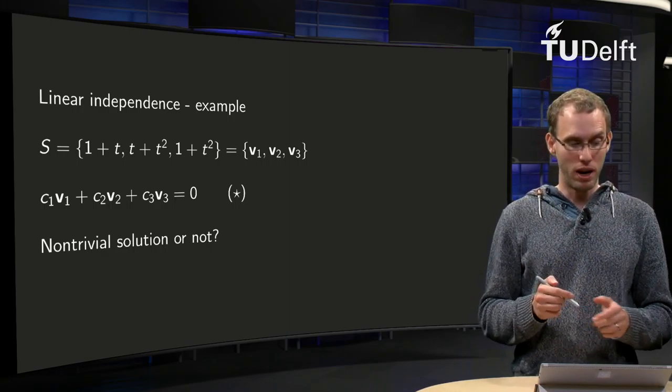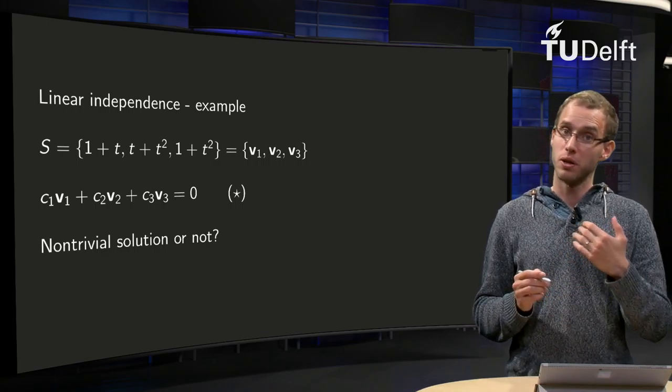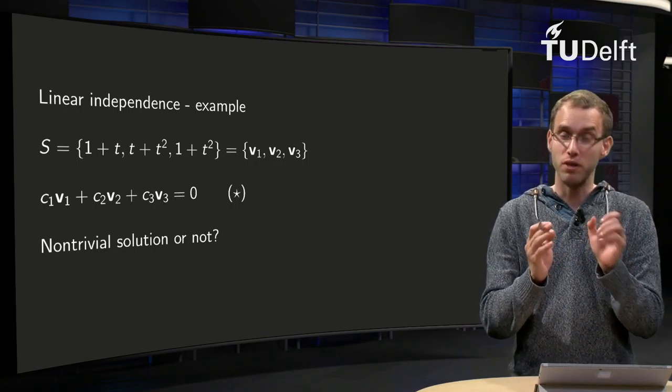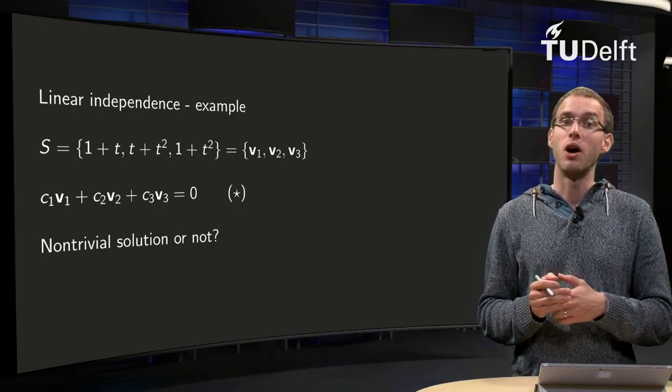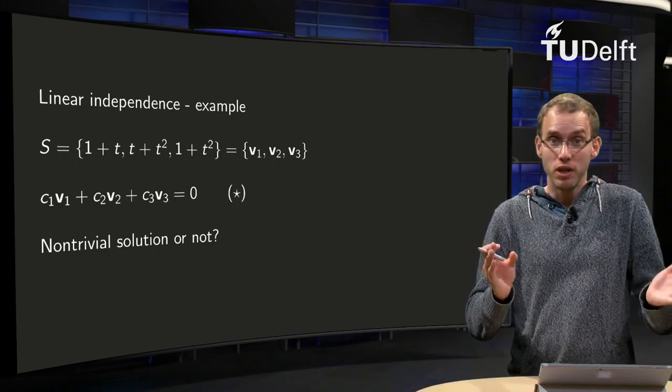If we have a set, here we have 1 plus t, t plus t squared, and 1 plus t squared, so three factors in our set S, and we wonder whether the set is independent or not. So how can we see that? Well, we have to use the definition.